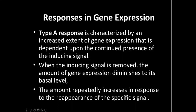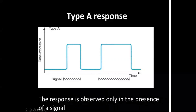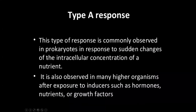The amount repeatedly increases in response to the reappearance of a specific signal. So as long as the inducer is there, there is expression. Whenever you remove the inducer, it comes to the basal level. When the inducer is added again, the expression enhances — this kind of response is called a type A response. This type of response is commonly observed in prokaryotes in response to sudden changes in the intracellular concentration of nutrients, and also in many higher organisms after exposure to inducers such as hormones, nutrients, or growth factors.